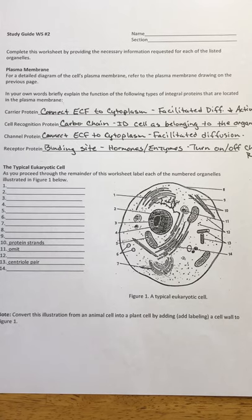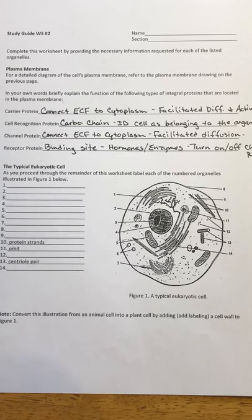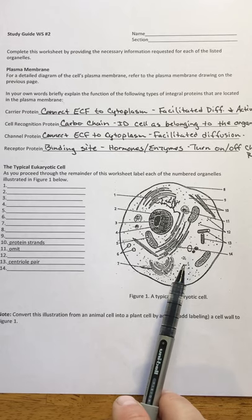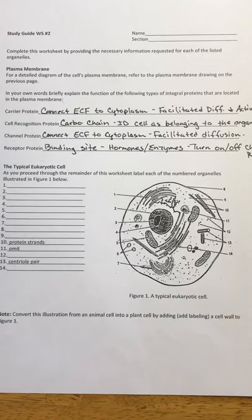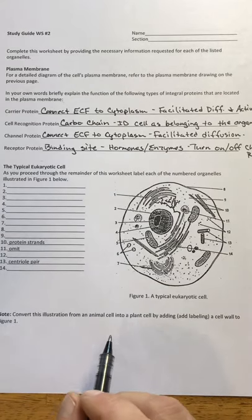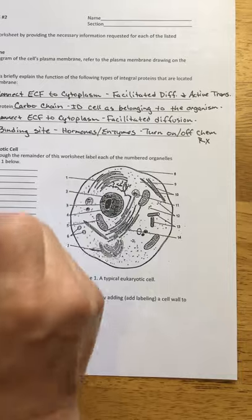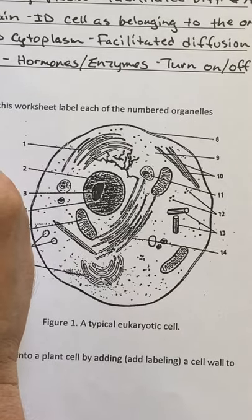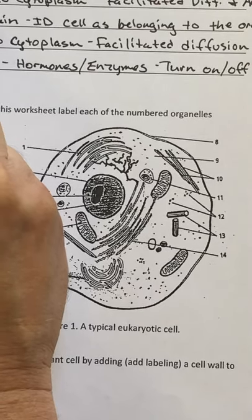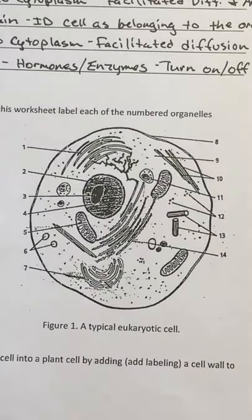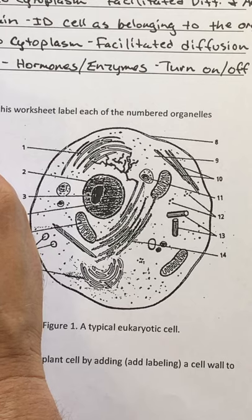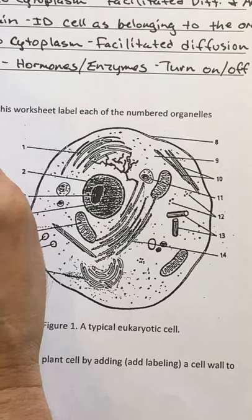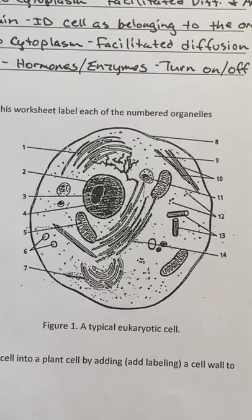After we get this labeled, we're going to go in and take a look at each one of these organelles, draw them individually, and discuss basically their structure and function. Number one on this diagram is the smooth endoplasmic reticulum — I'll abbreviate endoplasmic reticulum. Number two, you should recognize, is the nucleus. And we know that's the defining organelle of eukaryotic cells.